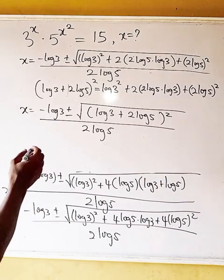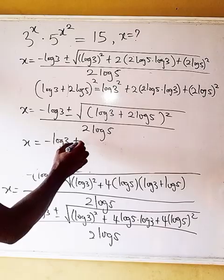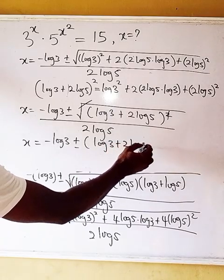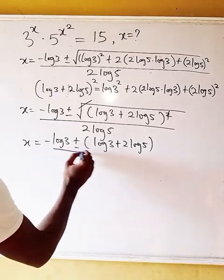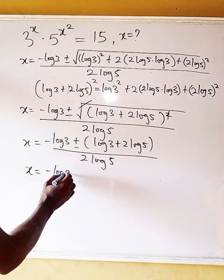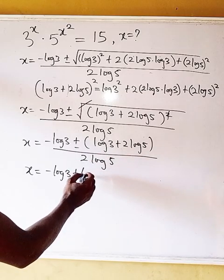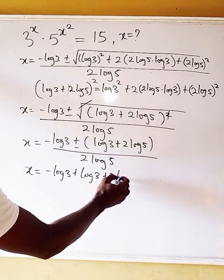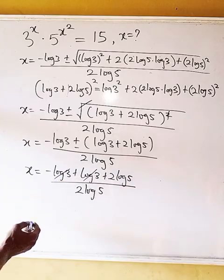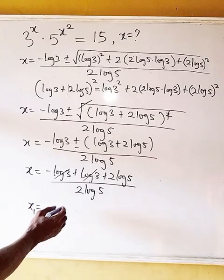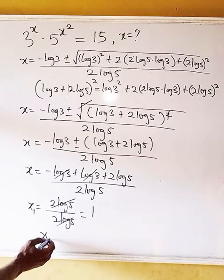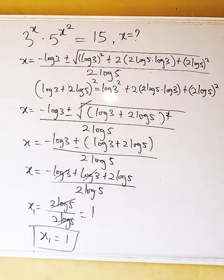Taking the positive case first: x equals (minus log 3 + log 3 + 2·log 5) divided by 2·log 5. The log 3 terms cancel, giving x = 2·log 5 divided by 2·log 5, which equals 1. So x₁ = 1 is the first solution.